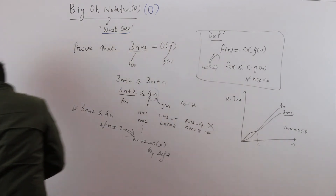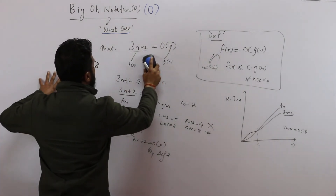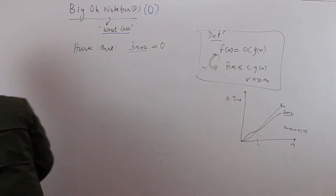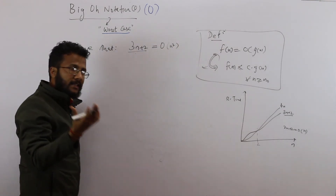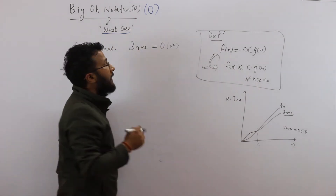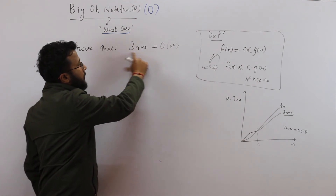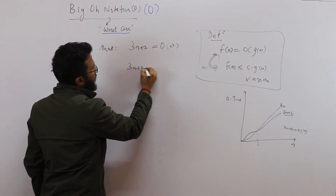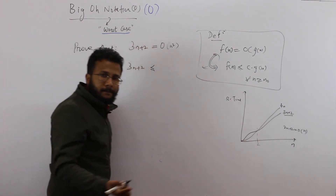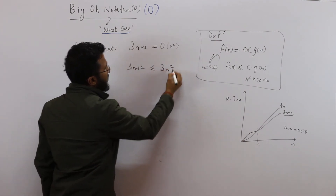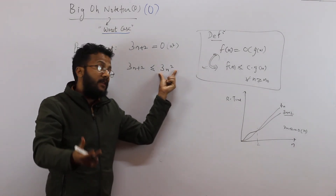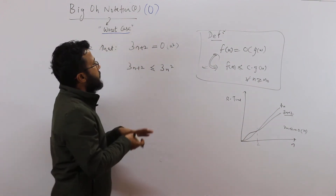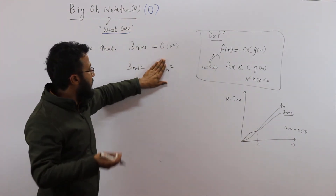Now let's change gn to something else — let's say gn is n squared. Can we prove that 3n plus 2 is Big O of n squared? That is, can 3n plus 2 be asymptotically upper bounded by n squared? By the definition, I have to show that 3n plus 2 ≤ 3n squared, because the quadratic term is always more than the linear term. We could also use 2n², 4n², 5n² — everything works. We just need to find one value of c and n₀ for which the inequality holds.